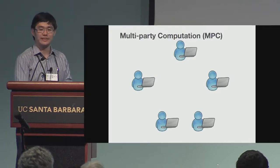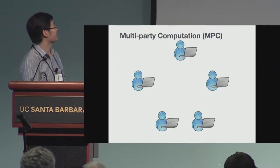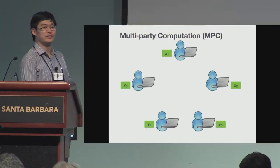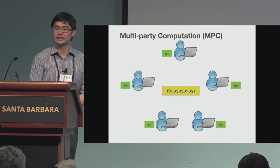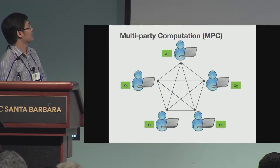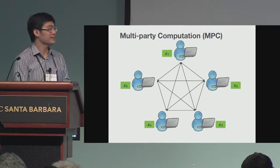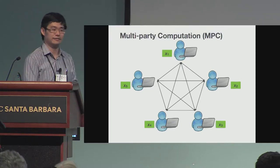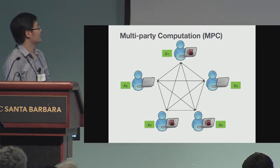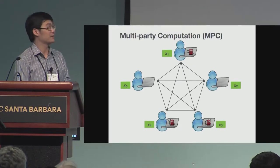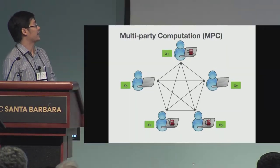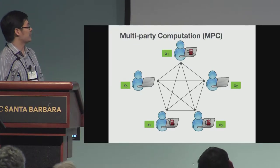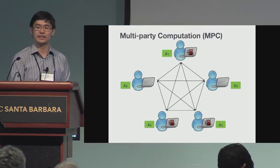Let's start with MPC, which we've probably seen several times at this conference already. We have a number of parties each with their own input, and they want to compute some function based on this input. They want to hide their own input from other parties, so they will exchange some messages in order to compute the output of the function. There's also an adversary that will corrupt some number of parties and try to steal the input of the honest parties, or try to make the computation fail.